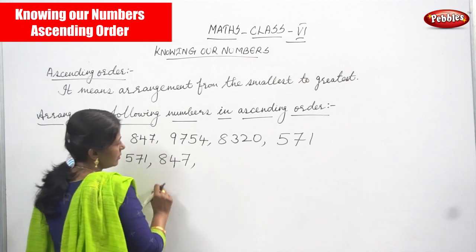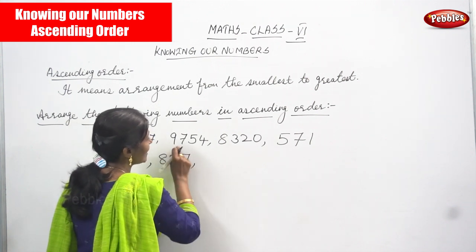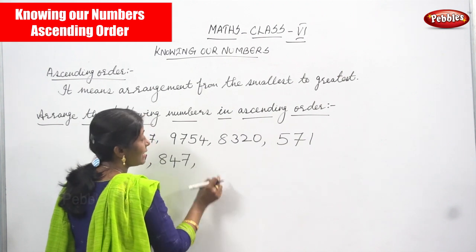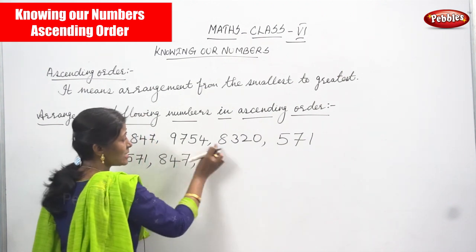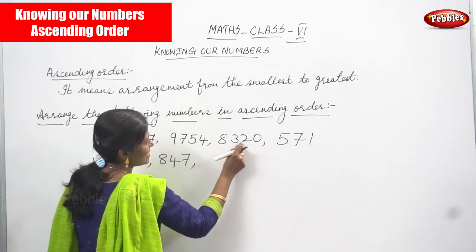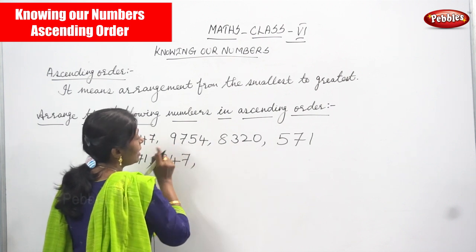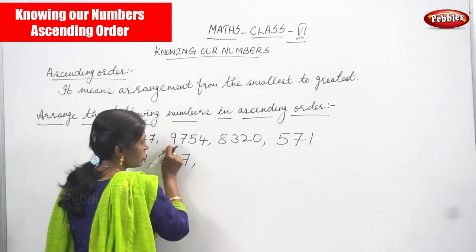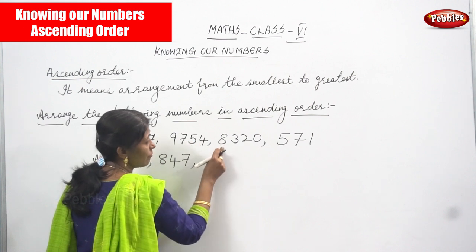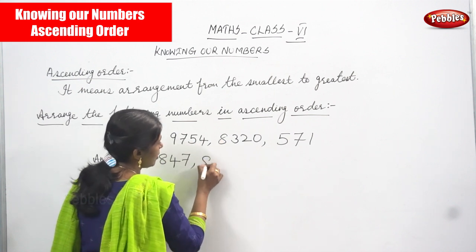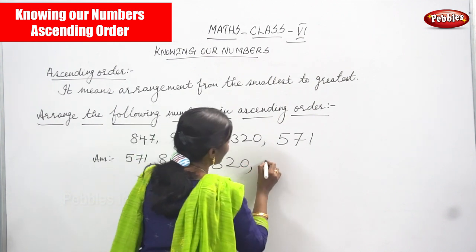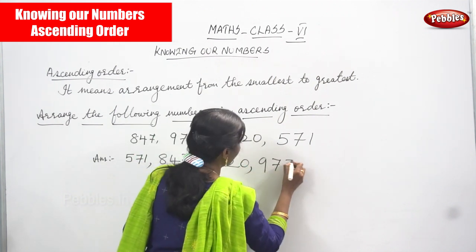Now we have to compare the two 4-digit numbers. We consider the thousands place: 9754 has 9 in the thousands place and 8320 has 8. Since 8,000 is less than 9,000, we place 8320 third and 9754 last.